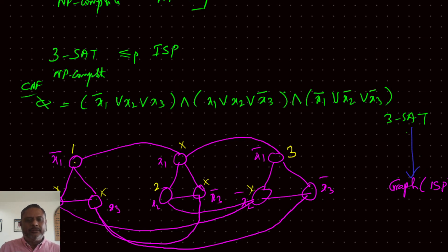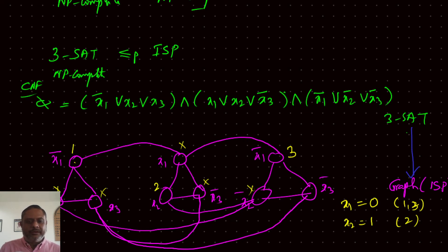Following this selection, we find that X1 should be 0 and X2 should be 1. There is no specific condition for X3, so X3 can be either 0 or 1.